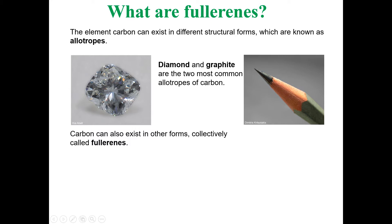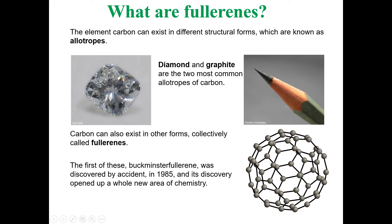Fullerene is the third known allotrope of carbon that was discovered accidentally in 1985. The well-known Fullerene is called Buckminsterfullerene, which was discovered accidentally in 1985. This discovery opened new ways and new areas of research in the field of chemistry and nanotechnology.